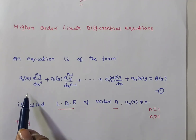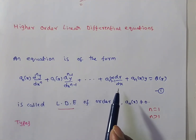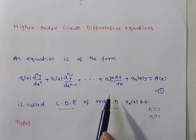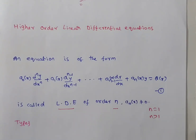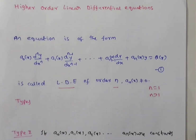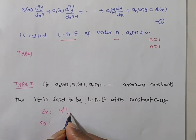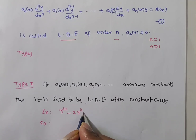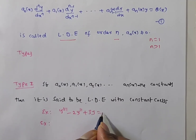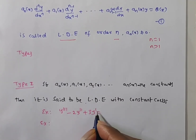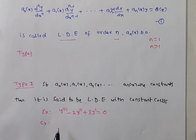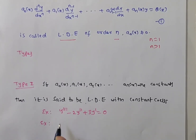If a₀(x), a₁(x), …, aₙ(x) are all constants, this is a linear differential equation with constant coefficients. For example: y''' - 2y'' + 3y' = 0 is a linear differential equation with constant coefficients.